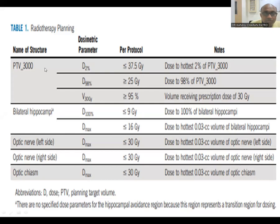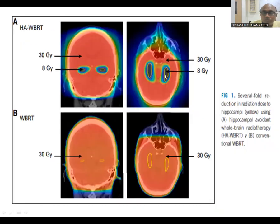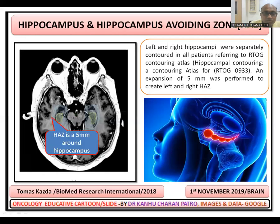Your PTV is planned to 30 Gy. D2% should be less than 37.5 Gy, D98% more than 25 Gy, and 30 Gy should cover more than 95% of the PTV. For bilateral hippocampus, 100% dose should be less than 9 Gy and D max should be less than 16 Gy — that is 0.03 cc. Remember to give this protocol to your physicists. The hippocampus avoidance zone requires a 0.5 cm margin around the hippocampus to reduce hippocampal dose.